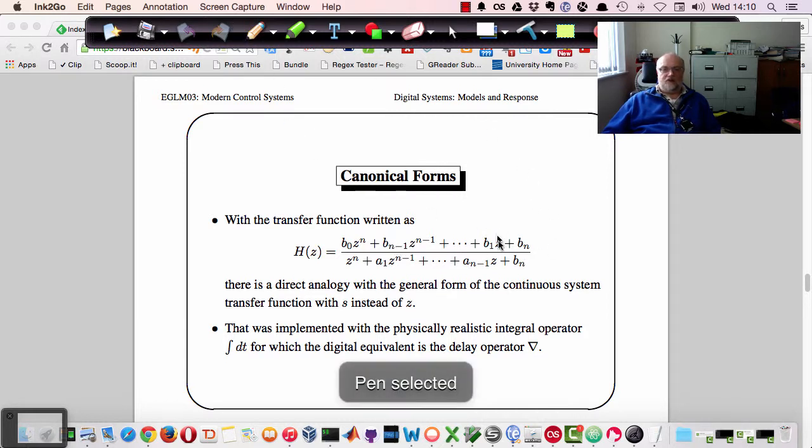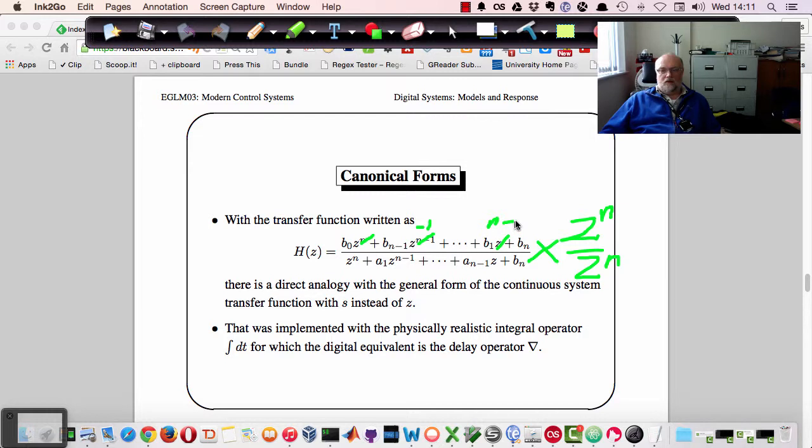So for example, if I was to take this expression here and divide it by z to the n, multiply by z to the n, we can see that these expressions would go, that would become 1, that would become minus 1, and that would be n minus 1, and that would be minus n, something like that. So you can always do that kind of resolution in order to get the response you want, whichever form is most convenient.